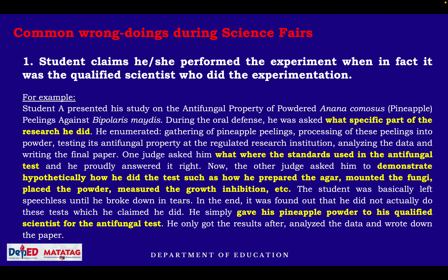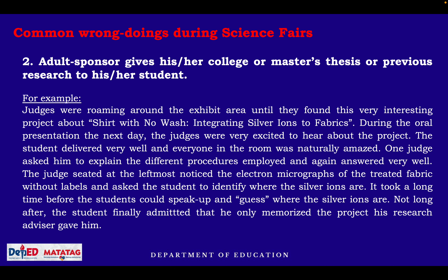This will be validated in your defense whenever the panel asks you questions — that is the role of the Q&A portion, to validate if you are the one who performed the experiment. Next wrongdoing: an adult sponsor gives his or her college or master's thesis or previous research to his or her students.